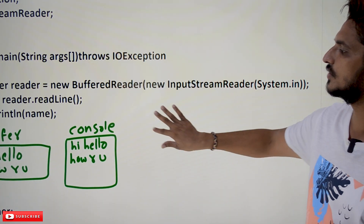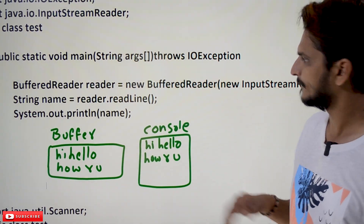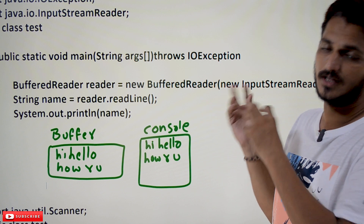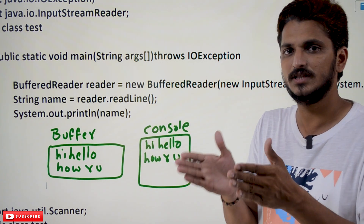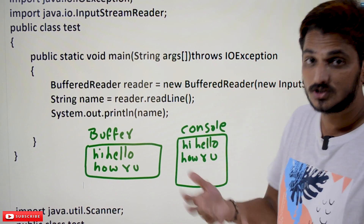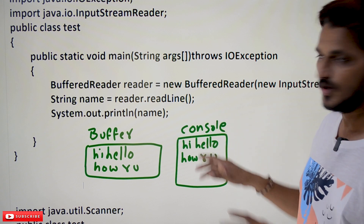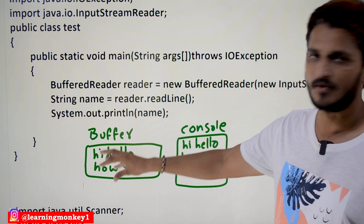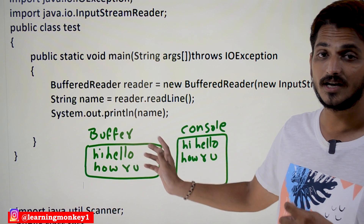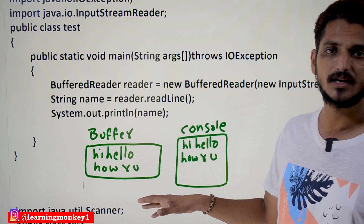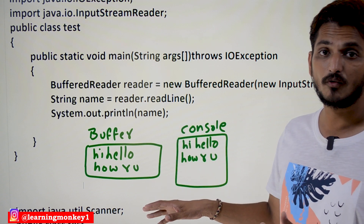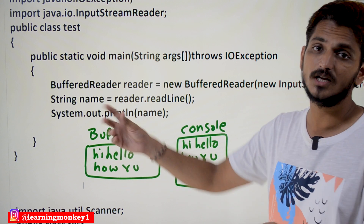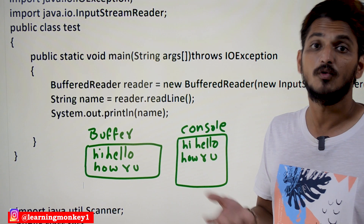The BufferedReader class creates some buffer space for our console. Whatever is typed from the keyboard is stored in the buffer — buffer means some memory space. For example, if in the console you have typed 'hi, hello, how are you?' — this entire data is read into the buffer space all at once, to provide fast access. From there, data is read line by line according to requirement, avoiding repeated trips to the console.